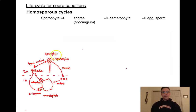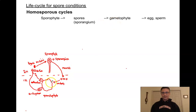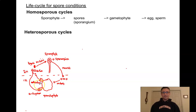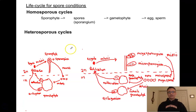Once we have a heterosporous life cycle, that gives us the potential for some new structures. In a homosporous life cycle, a sporophyte produces spores in a sporangium; meiosis leads to spores that give rise to a gametophyte capable of producing both sperm cells and egg cells. However, in a heterosporous life cycle, we have two different types of spores giving variation in both the gametophyte and sporophyte portions. We begin again with a sporophyte — a 2N plant.